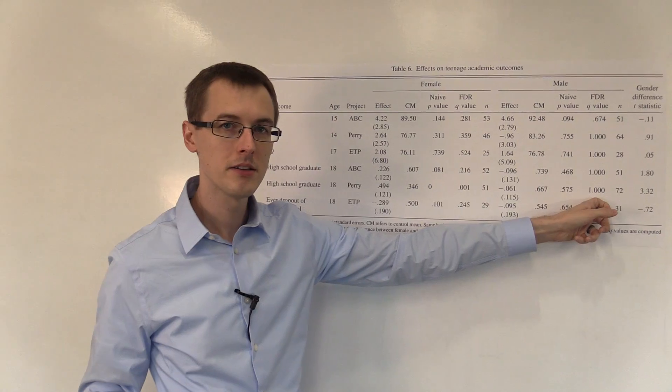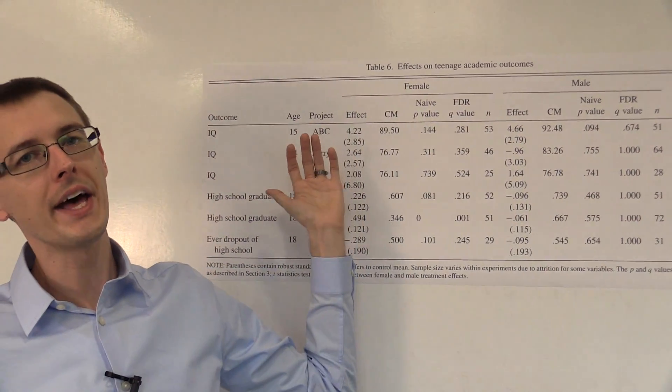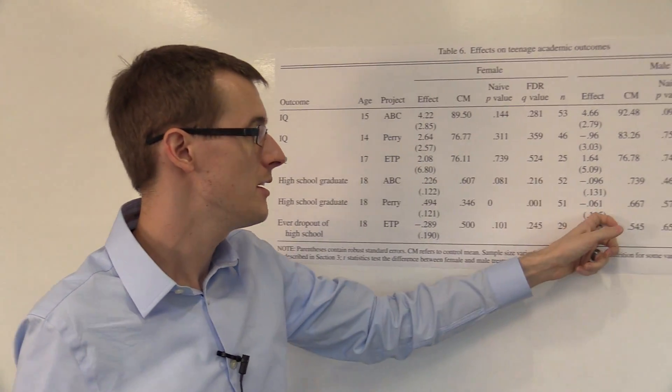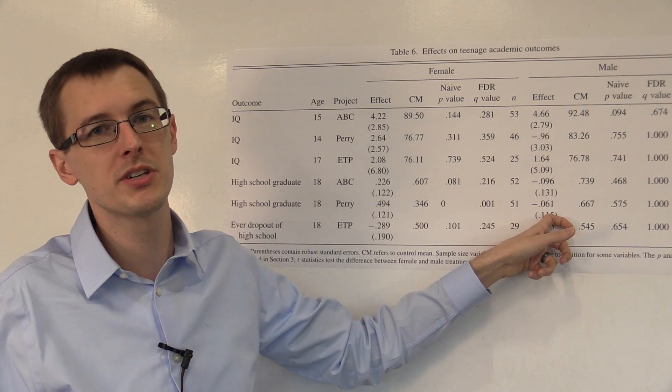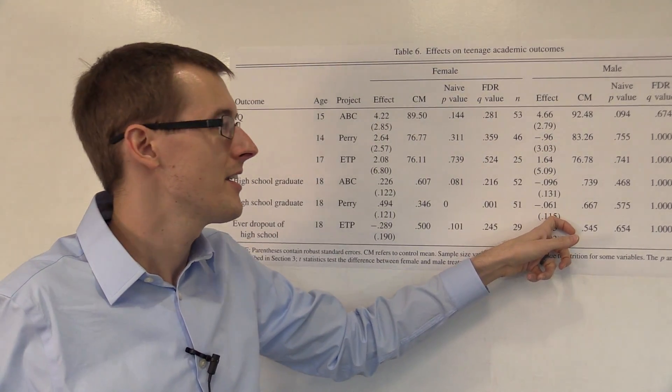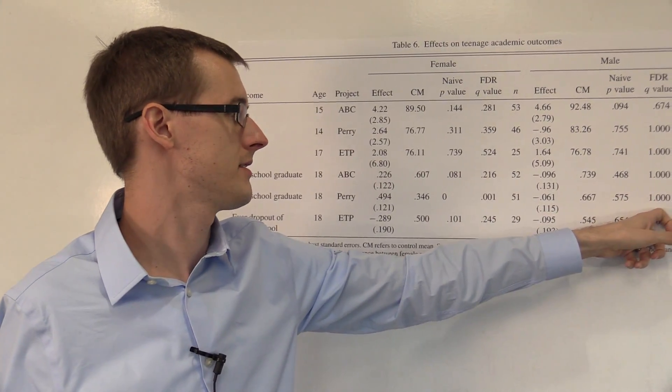If we look over here at males, the p-value is 1, much bigger than .05, so we have to throw our hands up and say, we don't know. Maybe this is a true effect, but maybe it's just because of the particular people we had in the data. We just don't know.